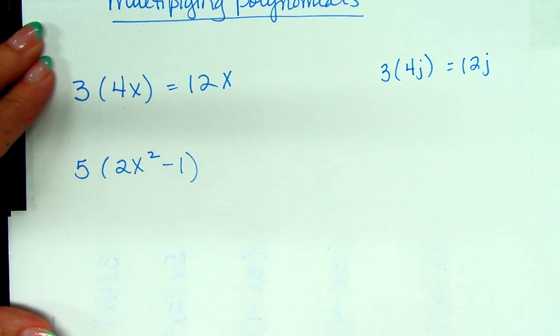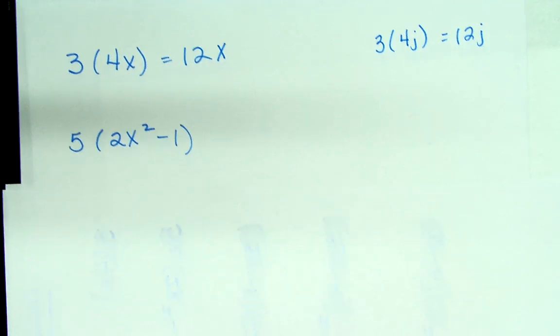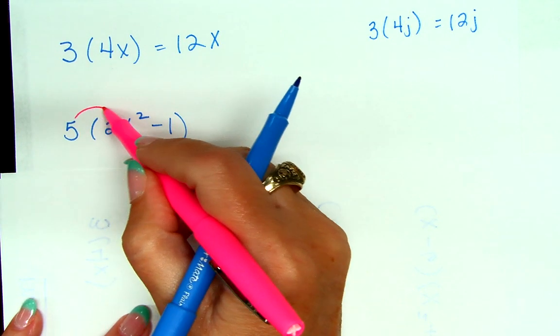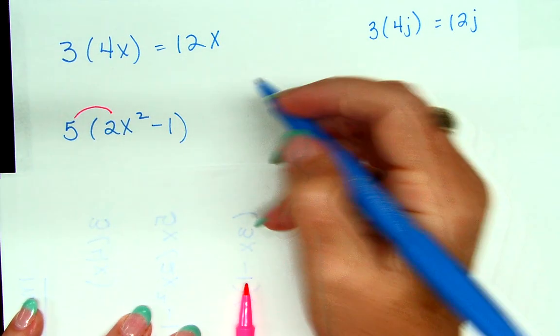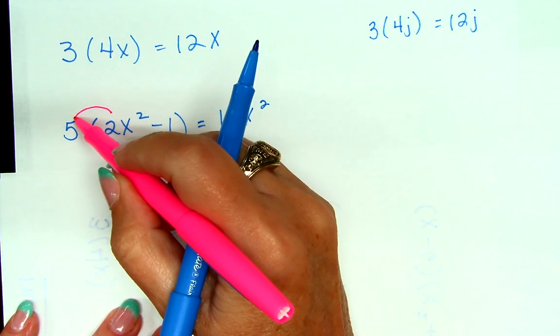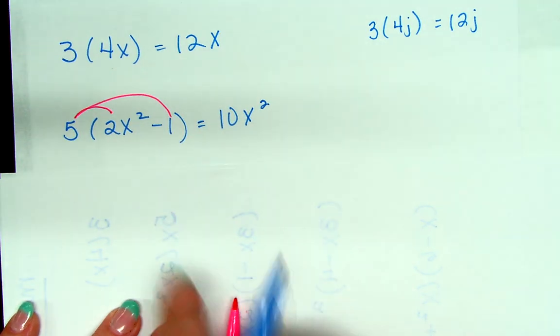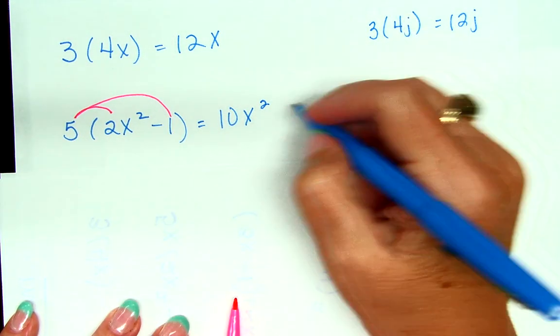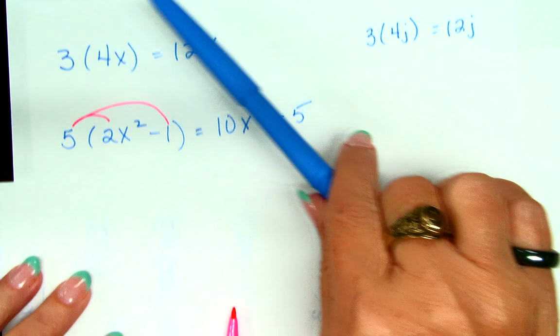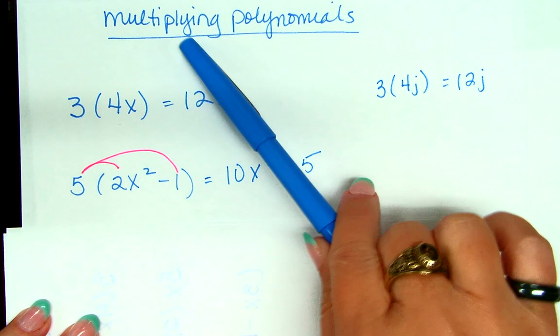All right, what about this problem? What do we do with this? Same thing? Yeah, so it would just be 10x squared minus 5. So 5 times 2x squared is what? 10x squared. 10x squared, and then? Negative 5. 5 times negative 1. And what's this called? Distributing. It is definitely called distributing. It's the distributive property. Distributing is multiplying, isn't it? So do you see why we're talking about it today?